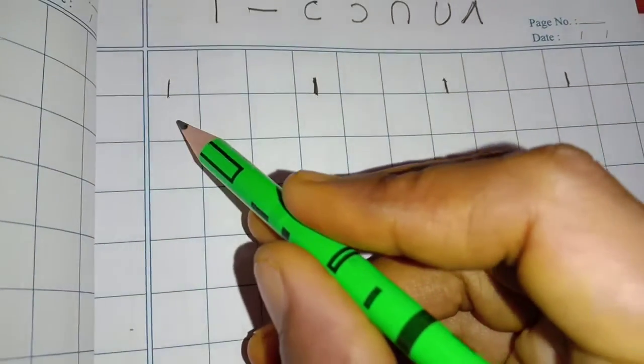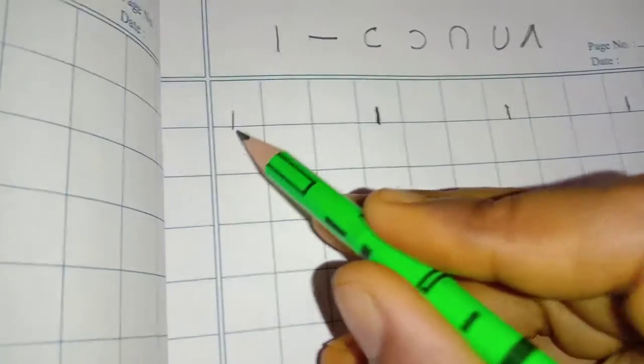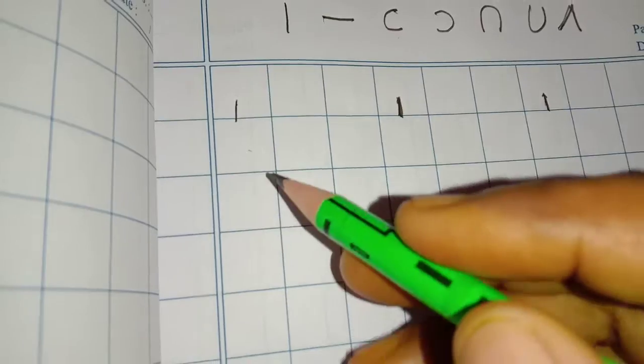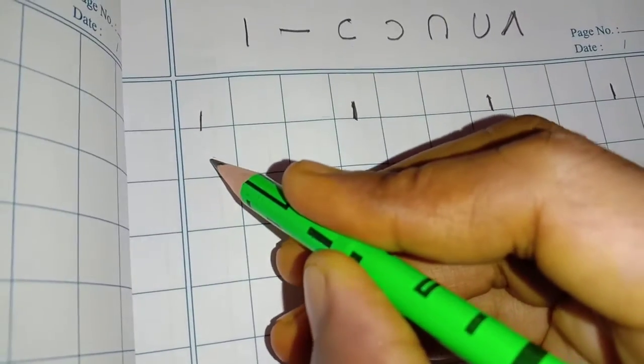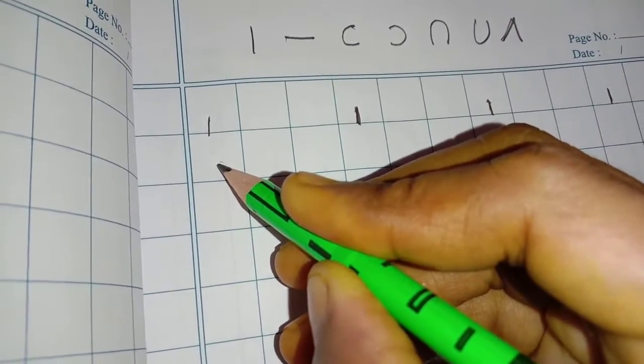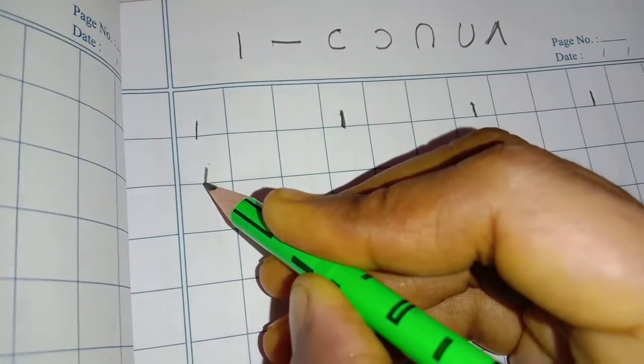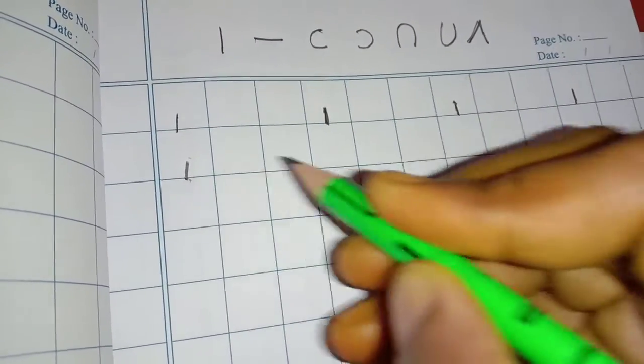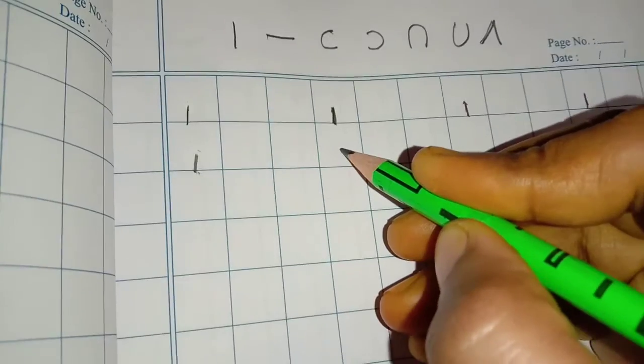Today we are going to see the number one. How to write this? Keep your pencil in the middle of the box and come down. Write a small slanting line and touch the line. You should touch the line.